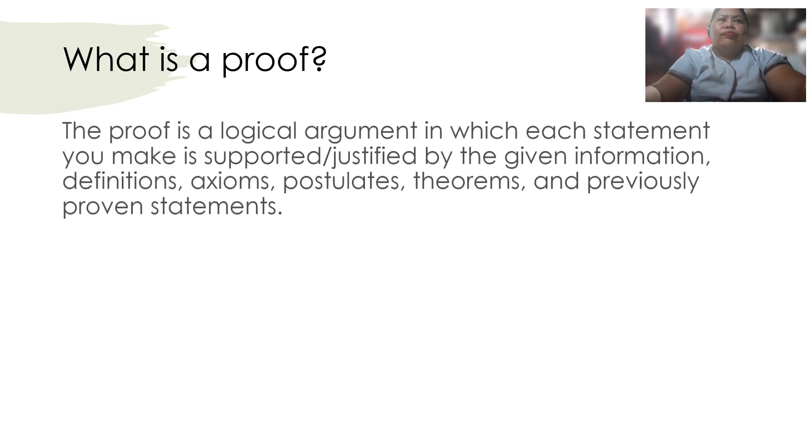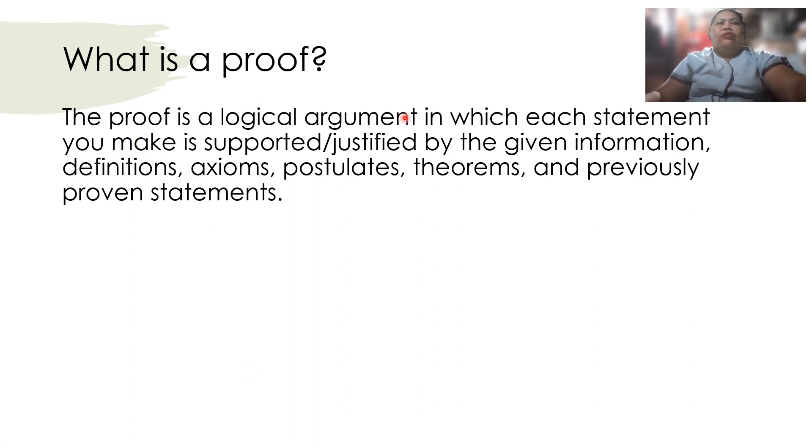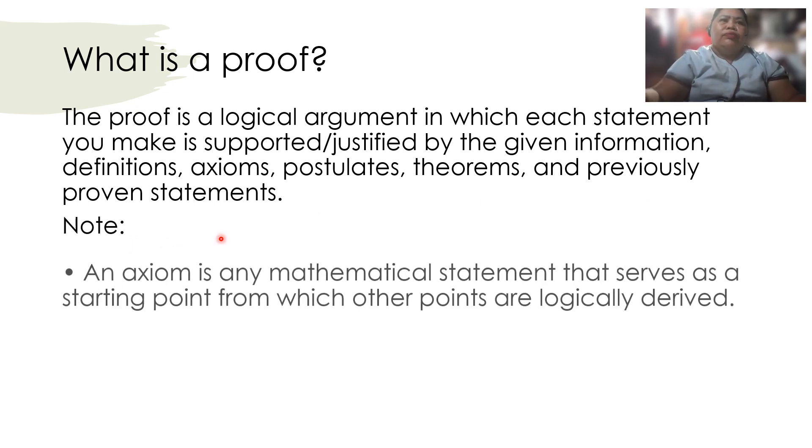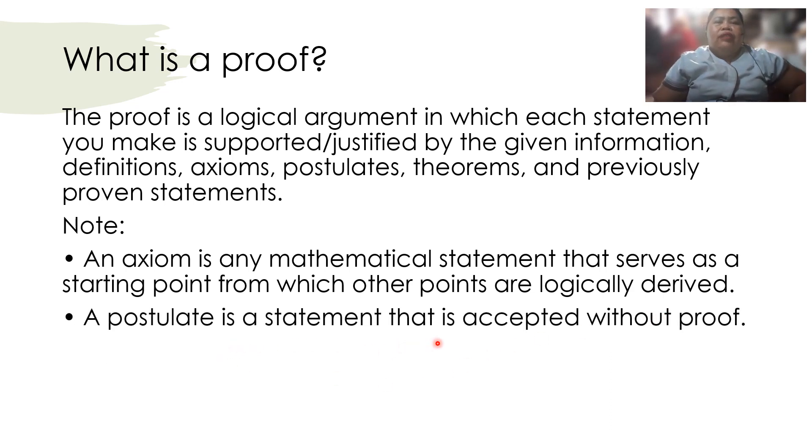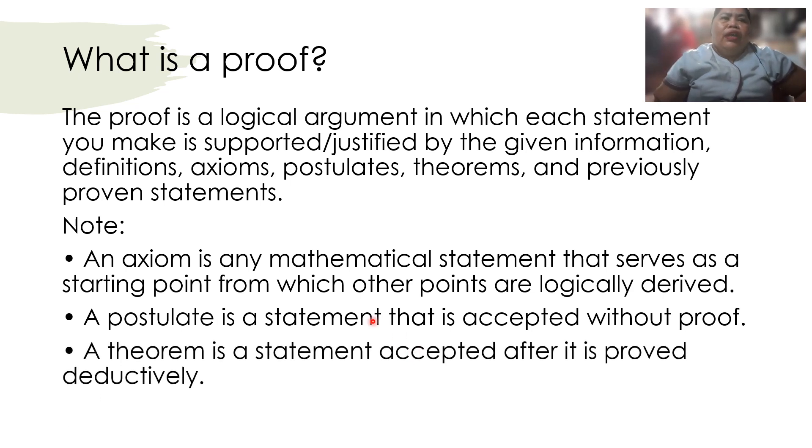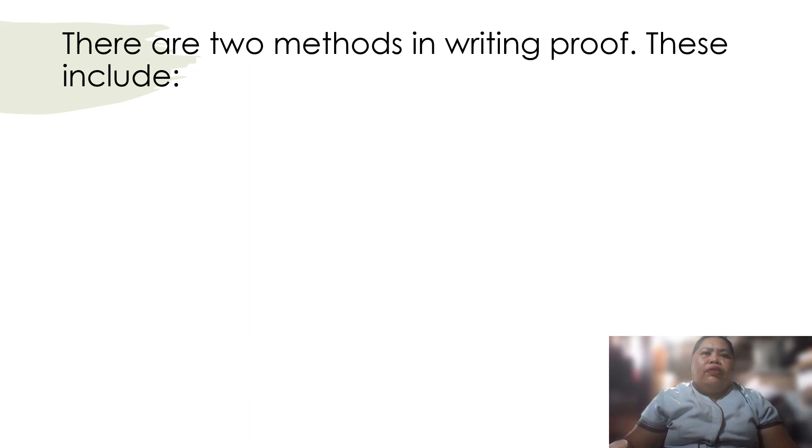What is a proof? Axioms, postulates - after it is proved deductively. There are two kinds or two methods in writing proofs, and these include direct proof and indirect proof.